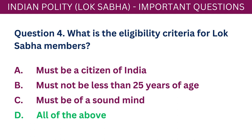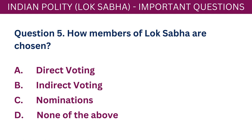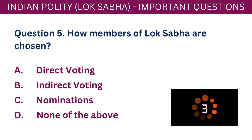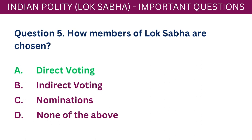Question 5: How are members of Lok Sabha chosen? A. Direct voting. B. Indirect voting. C. Nominations. D. None of the above. The correct answer is A - Direct voting.